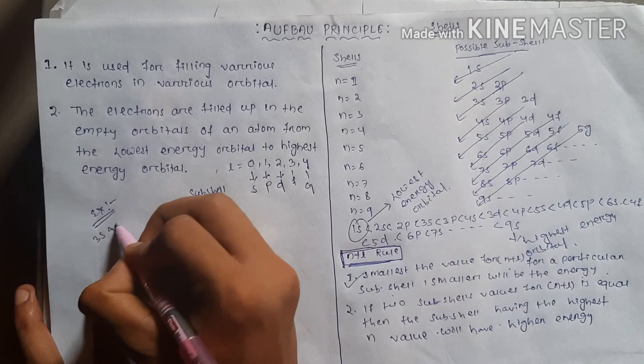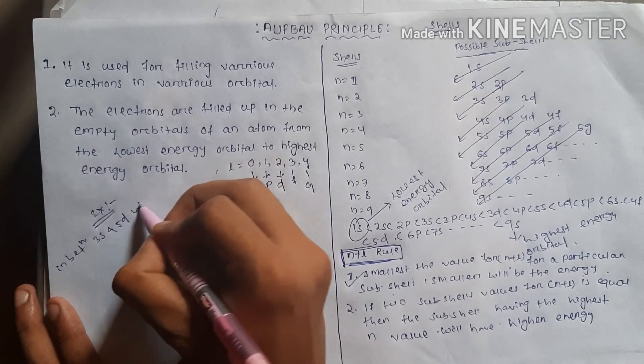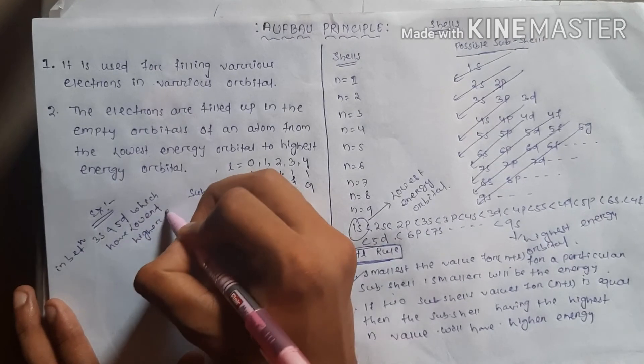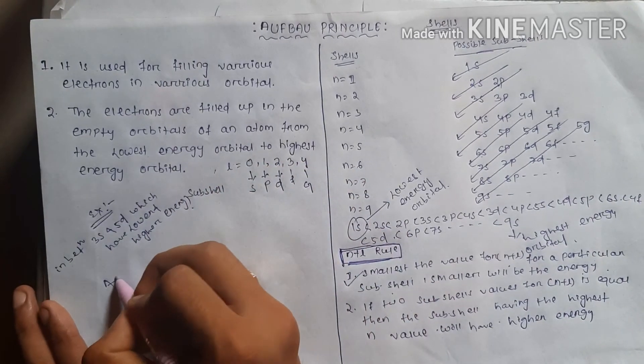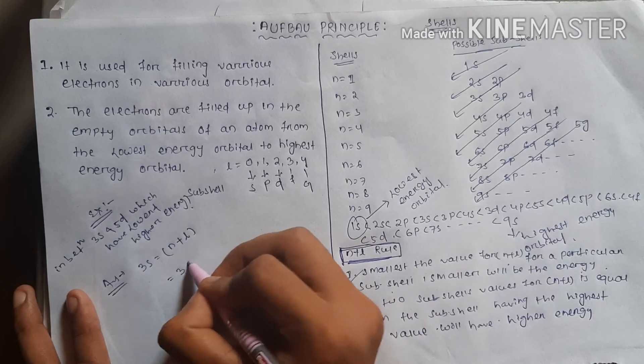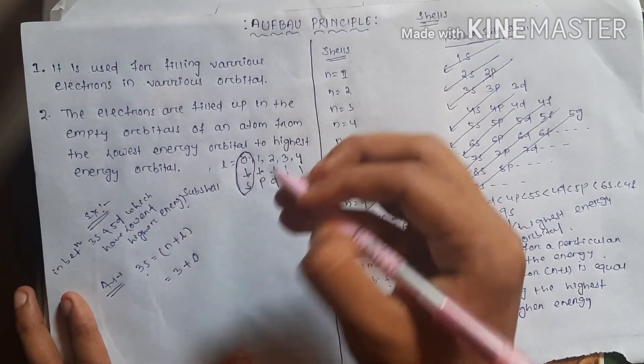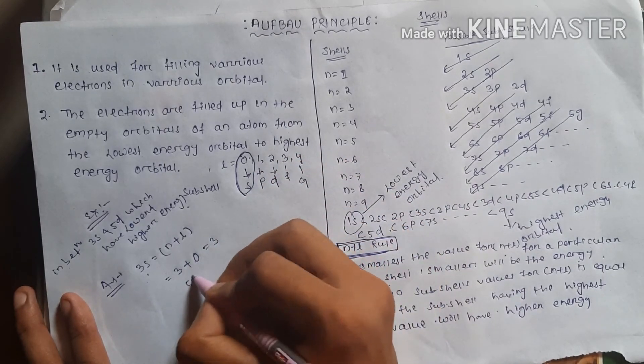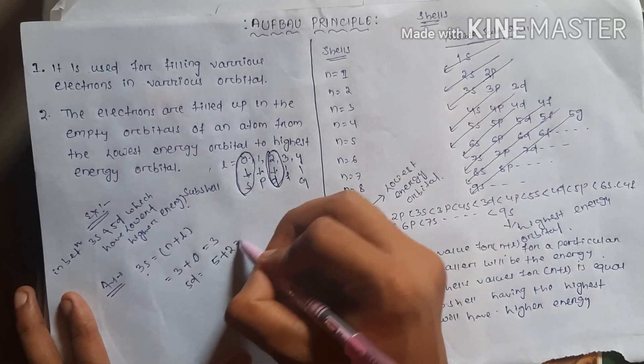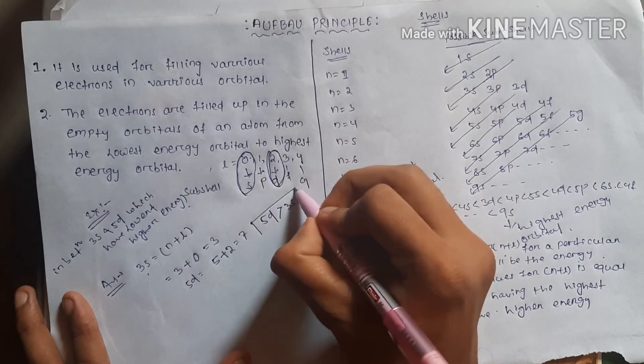Let us discuss it with examples. If a question arises: 3s and 5d, between 3s and 5d, which have lower and higher energy orbitals? For 3s, n plus l equals 3 plus 0 equals 3, since l for s is 0. For 5d, n equals 5, l for d equals 2, so 5 plus 2 equals 7. Then what is the result? 5d orbital is more energetic than 3s orbital.